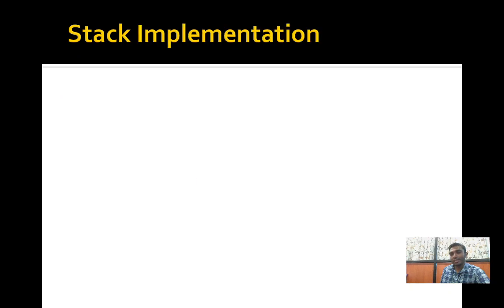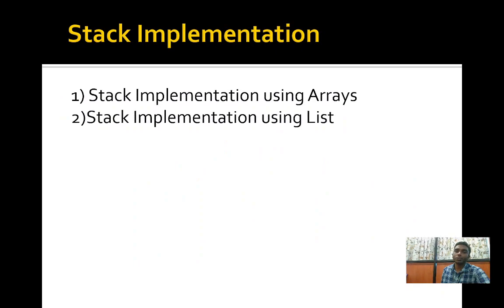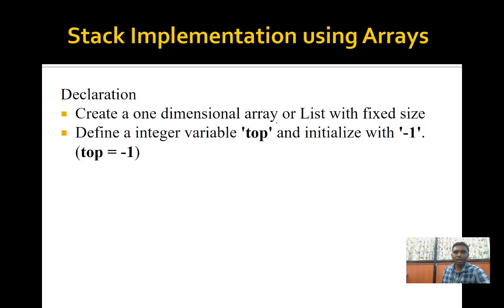The stack can be implemented in two ways: array implementation or linked list implementation. In this lab exercise we will implement the stack using array implementation. In C, we create a one-dimensional array and give the size of the stack. In Python, we use a list and give the size. We declare top as minus one initially because when the stack is empty, top is assumed to be minus one.